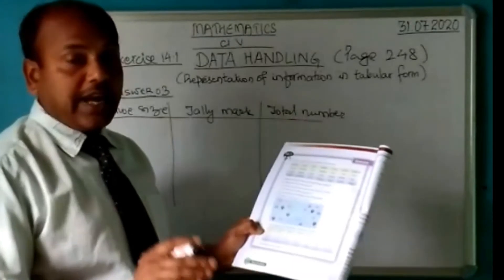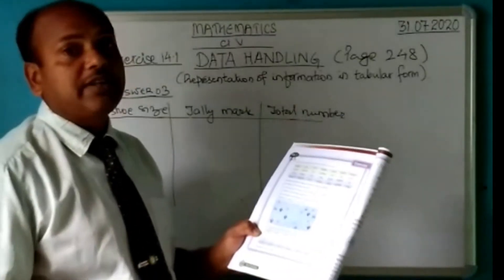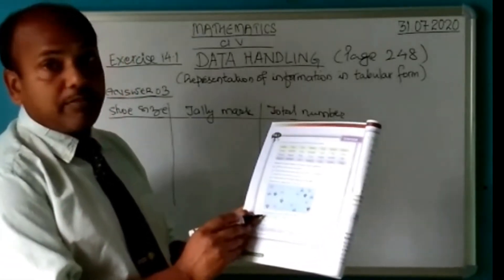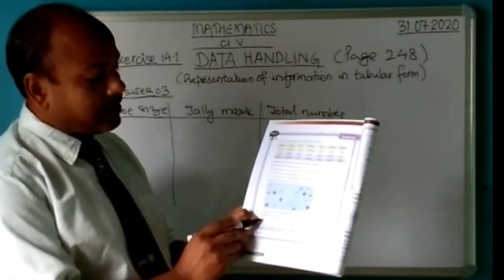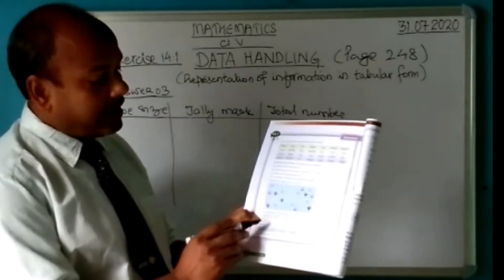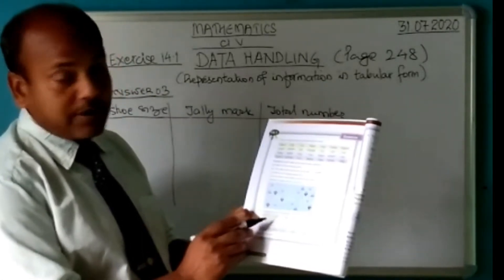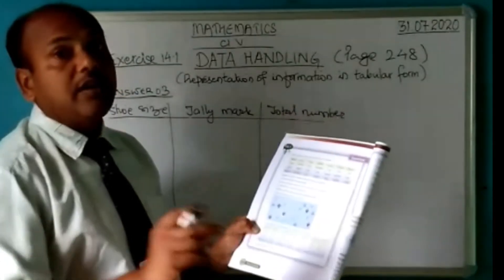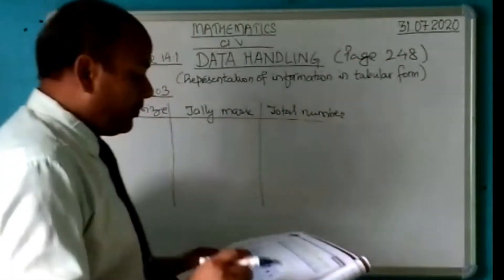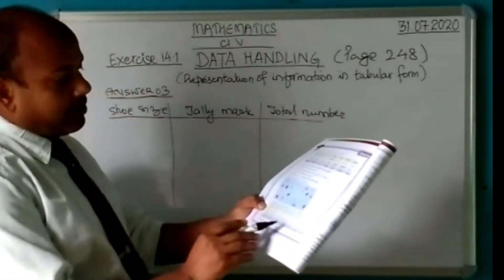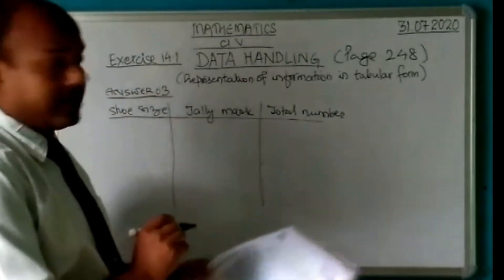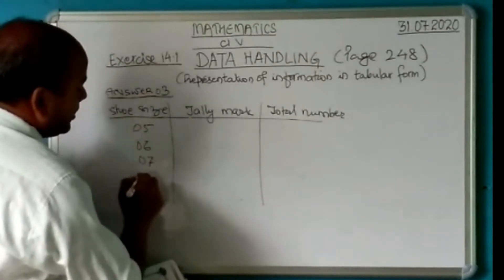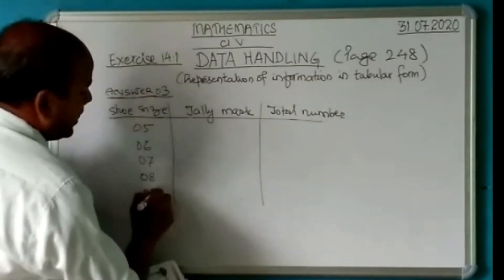There are 28 students and each student would have a different size of shoe — one student has size seven, another has number eight, another nine, and so on. In total there are 28 students and these are the sizes of the shoes they wear. The sizes begin with five, six, seven, eight, nine, and ten.